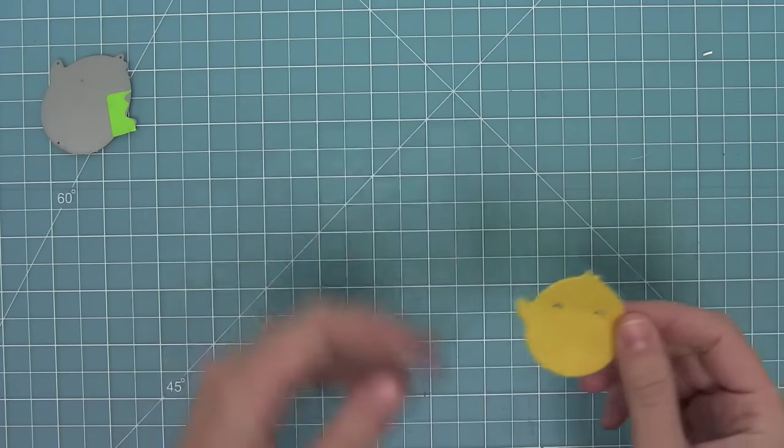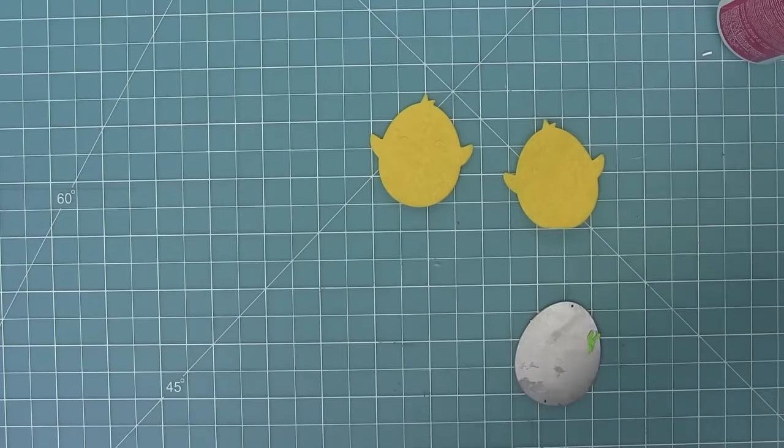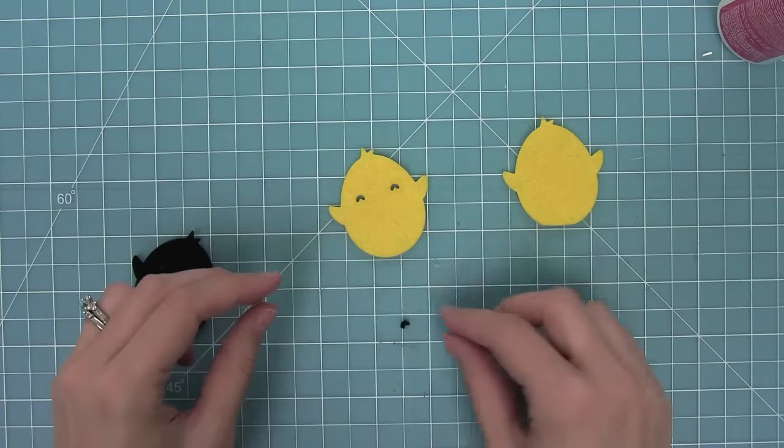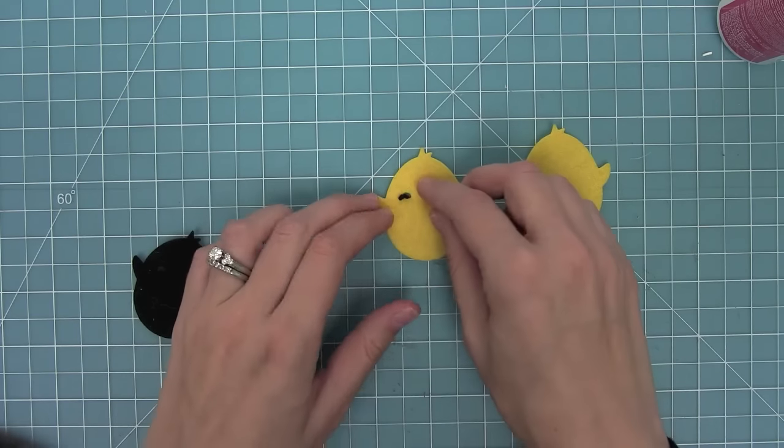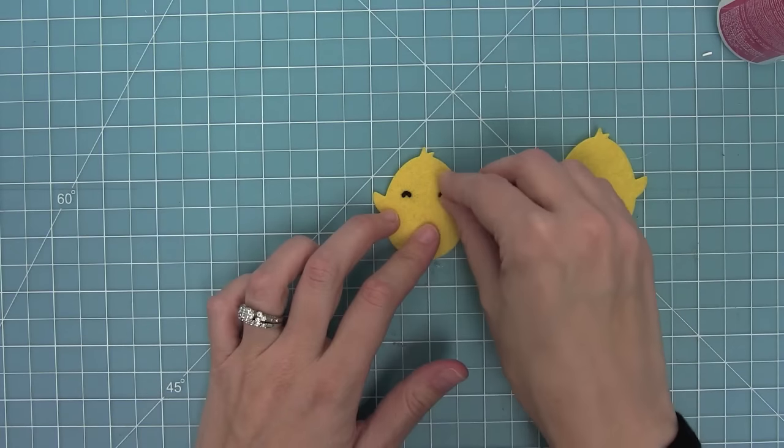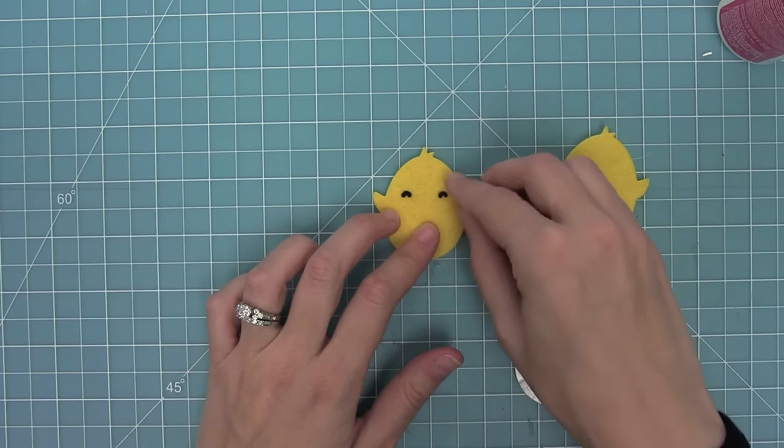One of the things I love about these dies is that they will cut felt so I went ahead and cut two of the little chickies from some yellow felt. Then I cut a chick from some black felt and I'm actually just going to pop out the little eyes and then pop them right into the chick. It's a nice way to color in the eyes without having black felt behind it which kind of shows through yellow felt.